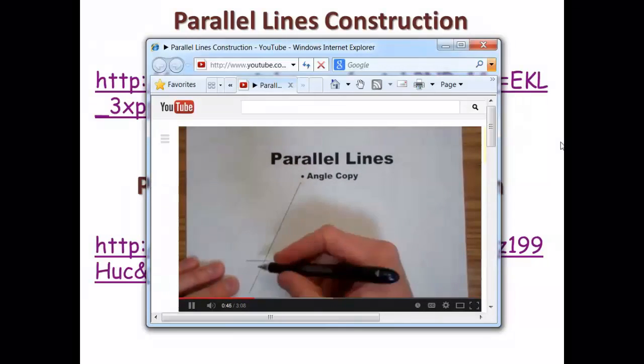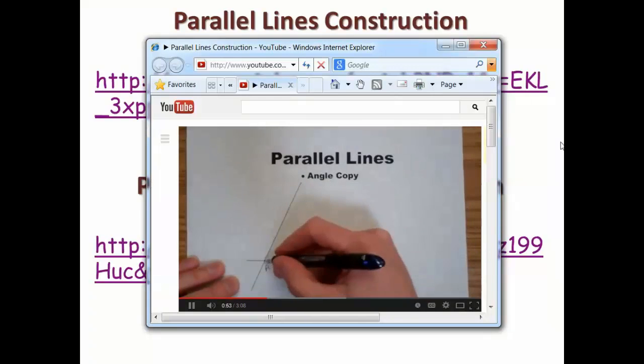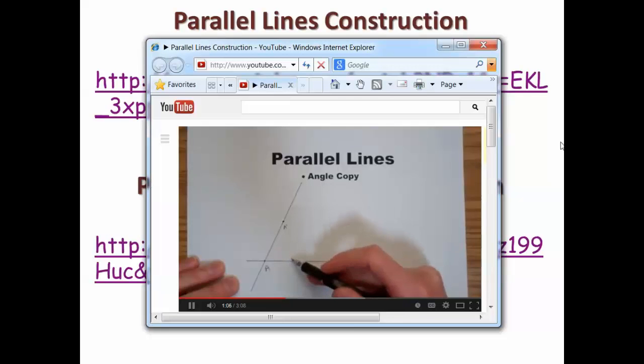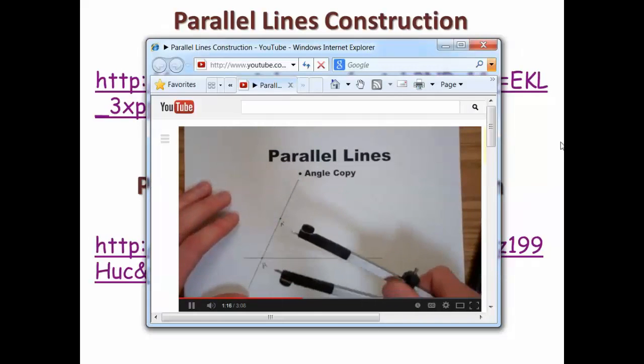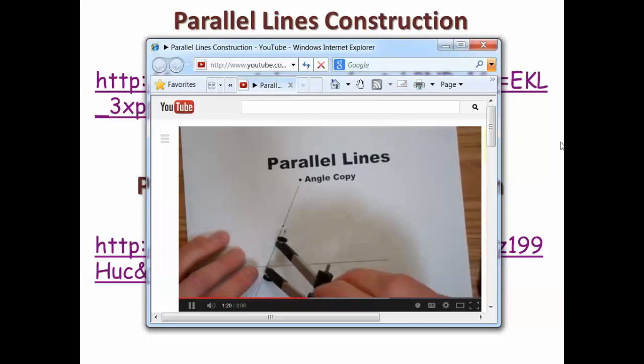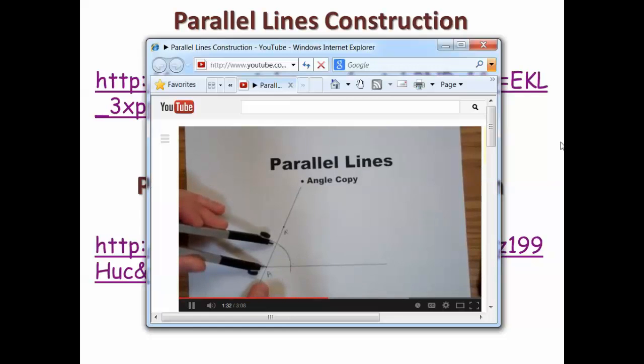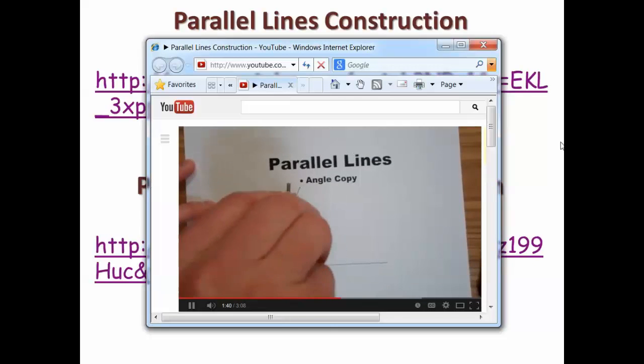I'm going to label the vertex A and I'm going to copy that vertex here and label it A prime. Now I'll use the angle copy construction to copy this angle from point A to here, point A prime. Recall to do an angle copy, I start by drawing an arc that intersects both sides of the angle. Now I'll copy that arc to the new vertex A prime, so I stab the compass in the vertex and I make the same arc.